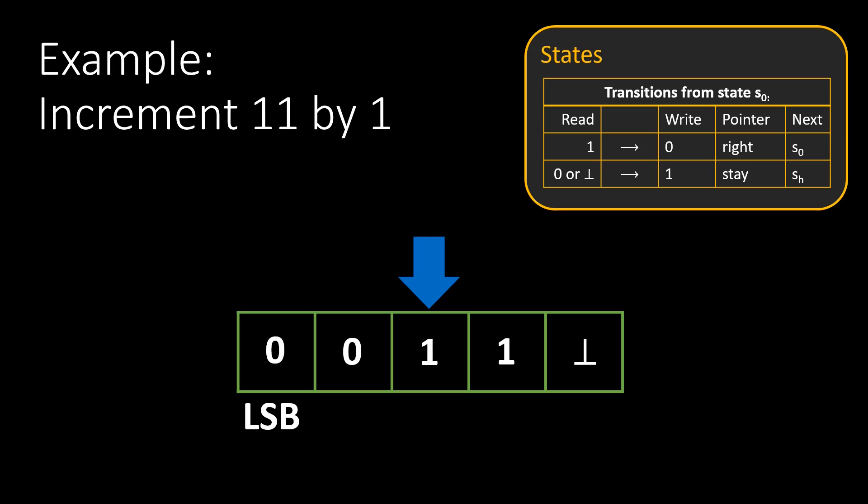The next state is SH, which is the halting state, so our machine halts. The values on the tape now read 1100, which is the binary representation of 12. The incrementation was successful.